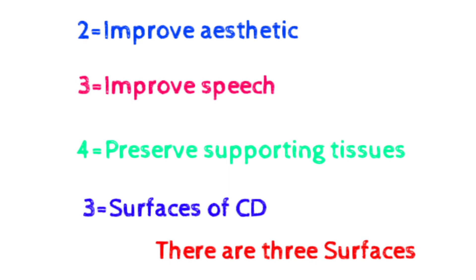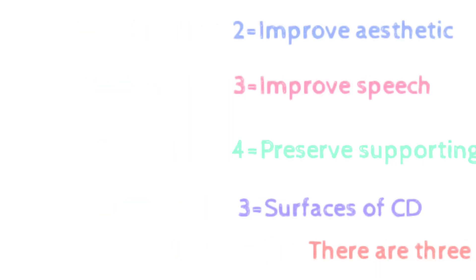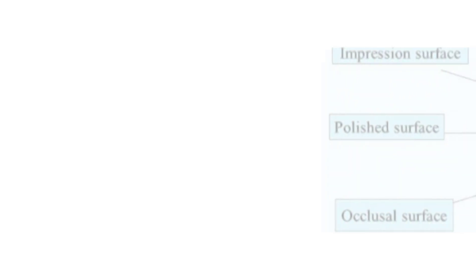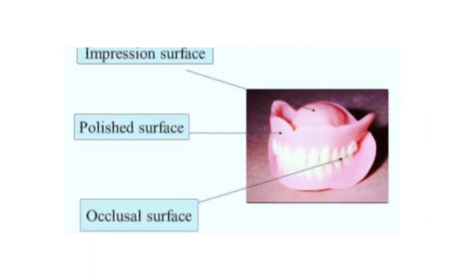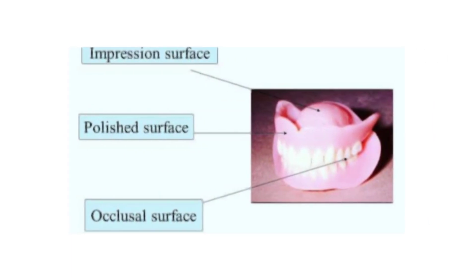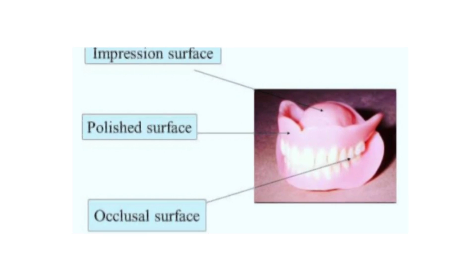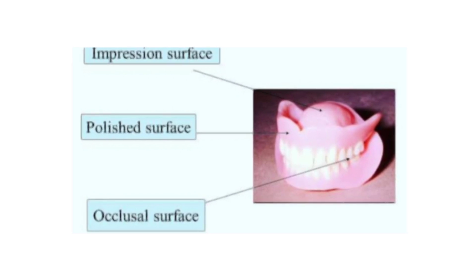Now the third heading is the surfaces of complete denture. There are three surfaces: number one is the impression surface, which is toward the basal seat tissue on which the denture base rests. Second is the polished surface, which includes the buccal and lingual surfaces. Third is the occlusal surface, which has the teeth.